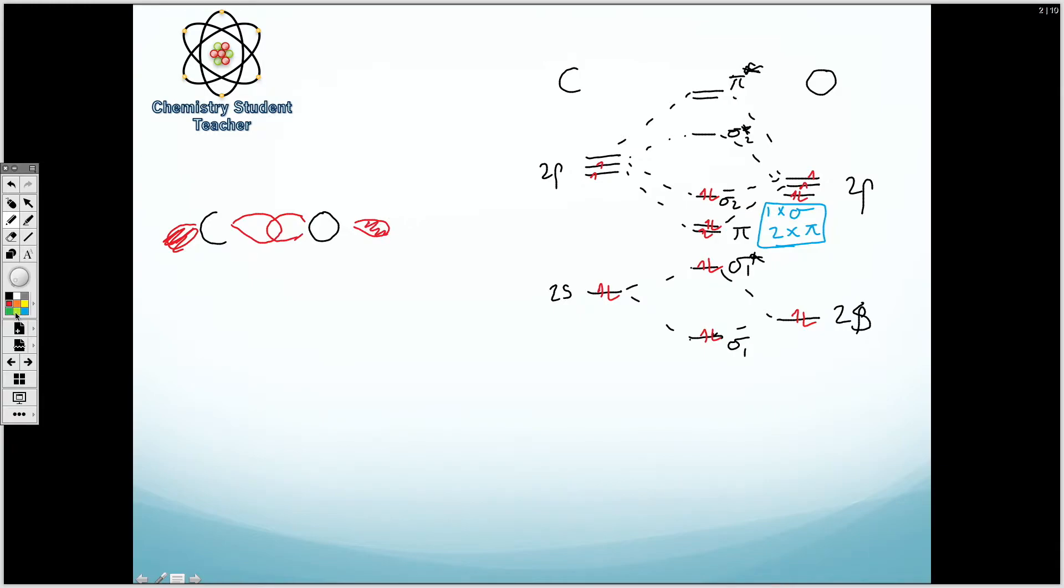It looks a bit like this. If I change the colour, we can also have one of these pi bonds coming out on this axis. Let's call this the z axis. Let's call that the x axis. And let's call the one coming out towards us the y axis.